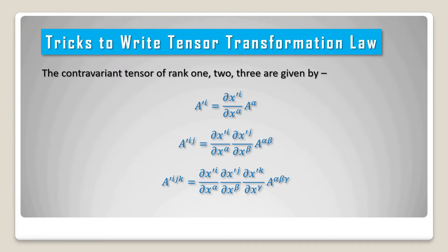The second order contravariant tensor is given by a prime upper suffix ij equal to del x prime i divided by del x alpha into del x prime j divided by del x beta into a upper suffix alpha beta. The third rank contravariant tensor is given by a prime ijk equal to del x prime i divided by del x alpha into del x prime j divided by del x beta into del x prime k divided by del x gamma into a upper suffix alpha beta gamma.